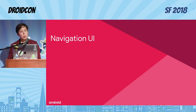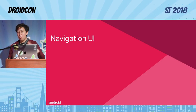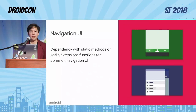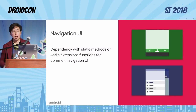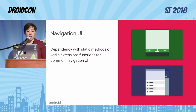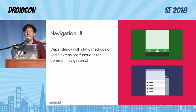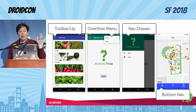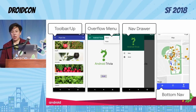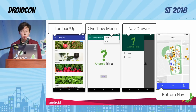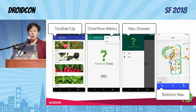Let's switch gears and talk about Navigation UI, the second library included in all of this. Navigation UI includes Java static methods or Kotlin extension functions for common navigation UI such as any kind of bar you can think of — action bar, toolbar, collapsing toolbar — as well as implementing the up button correctly, overflow menus, navigation drawers, and bottom nav.